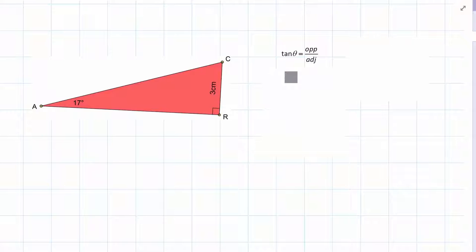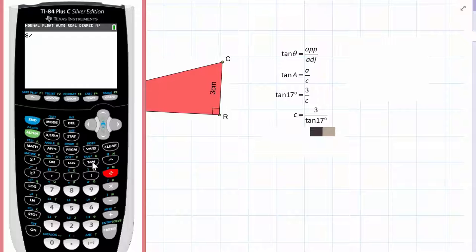Tan theta equals opposite over adjacent, so tangent of angle A equals little a over little c, so tangent of 17 degrees is 3 over C. Well, how do we solve for C? Well, we can do it like we just did up above and have C and tan 17 degrees trade places. This gives us C equals 3 over tan 17 degrees, which we can now easily type into our calculator. I'm getting 9.81225, etc., which I think I can round off safely to 9.8 centimeters.